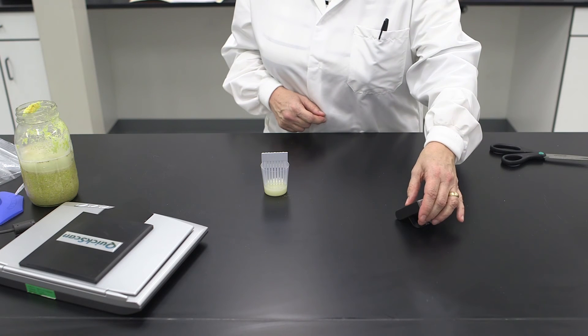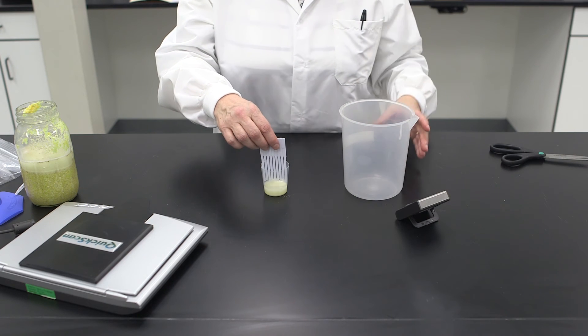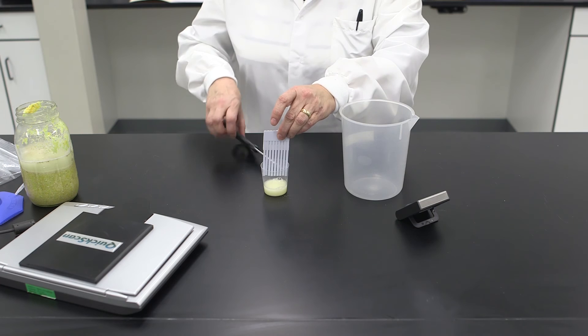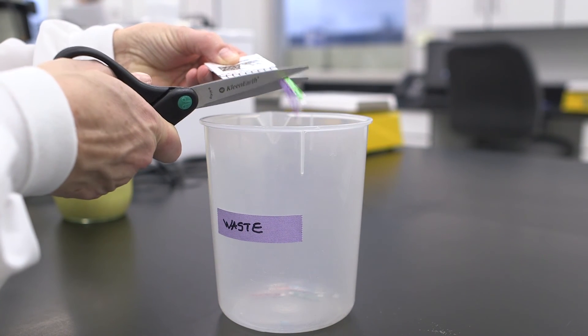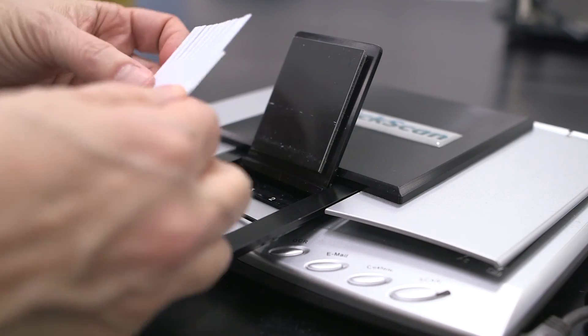At exactly five minutes, remove the Quick Comb from the cup. Cut off the reaction strips just above the tail pads. Immediately place the comb into the Quick Scan system for quantification.